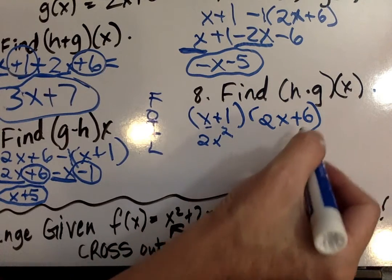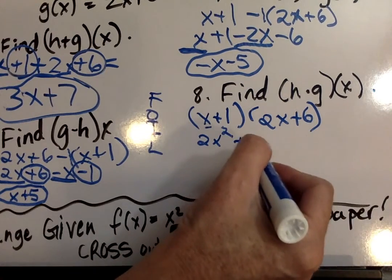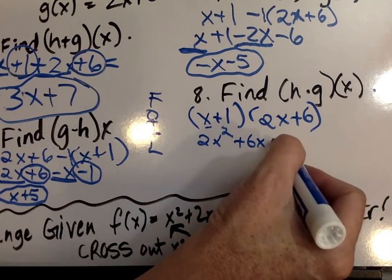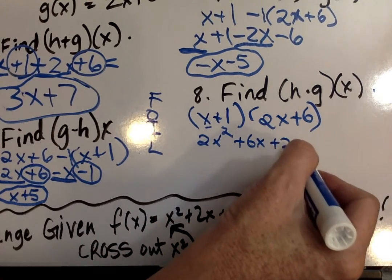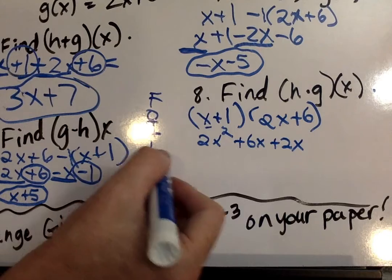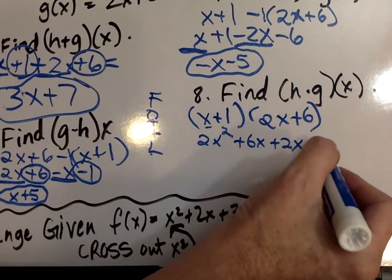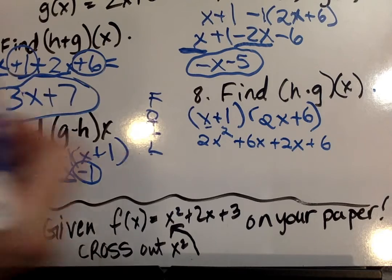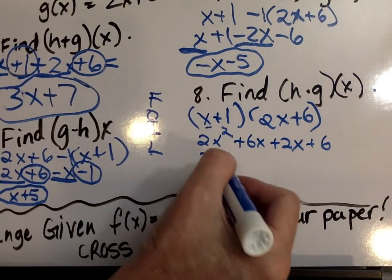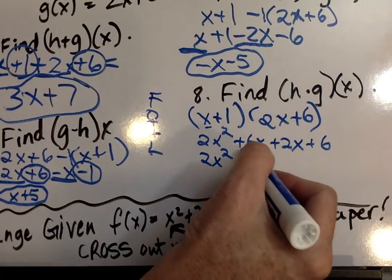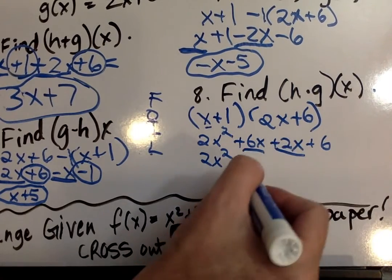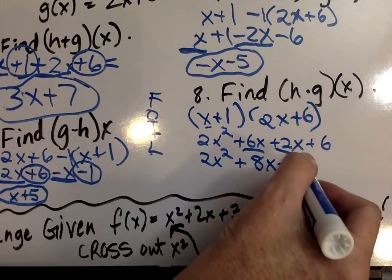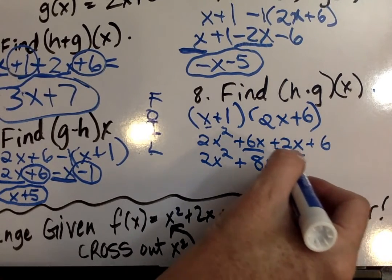Outside, x times 6, so that's plus 6x. Inside, 1 times 2x is 2x. And then last two, 1 times 6. Then we combine our middle terms. So 2x squared, 6x and 2x. Again, I'm going to underline like terms. Plus 8x plus 6. And you're done.